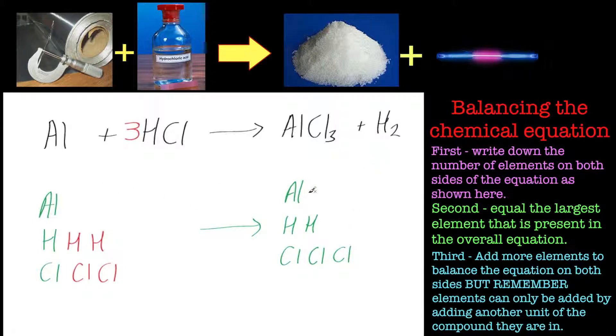But on this side, we've only got two hydrogen atoms. So we need to find an extra one. We've got the right amount of aluminum. We've got the right amount of chlorine. We need an extra one hydrogen. So one way of doing that would be to multiply that by one and a half.